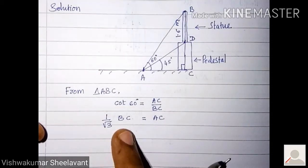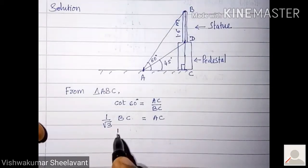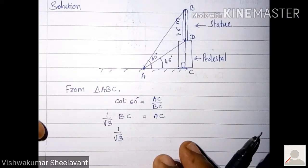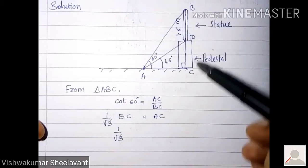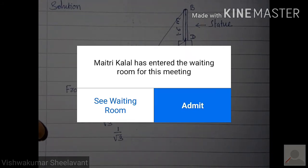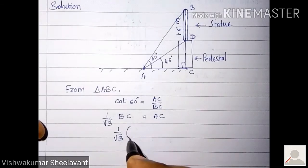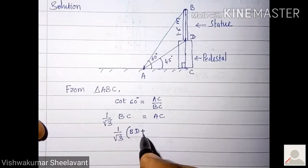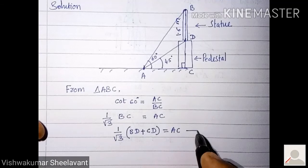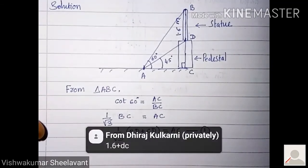1 by root 3 into BC equals AC. Transferring BC onto LHS. What is BC? BC is BD plus CD. So 1 by root 3 into the bracket BD plus CD equals AC. Call this as equation 1.